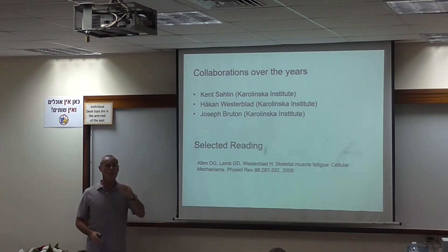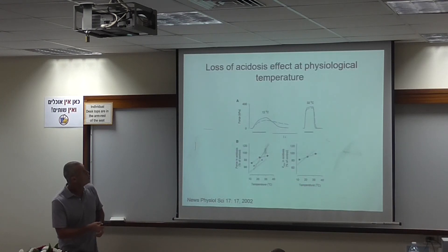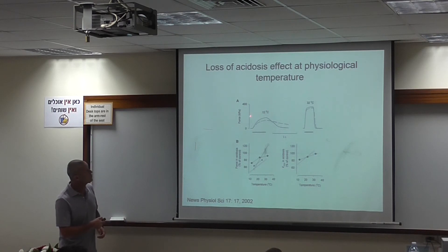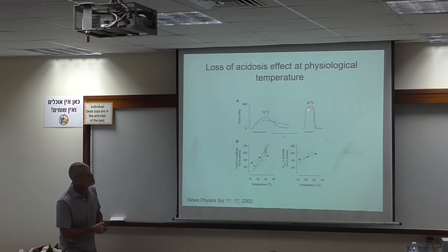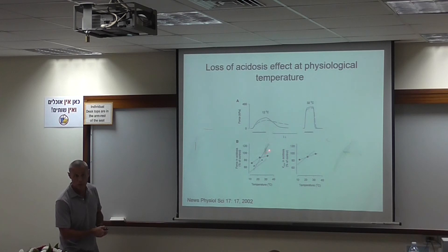There are other data showing that the effect of hydrogen ion is strongest at low temperature. When we go to more physiological temperature, the effect of pH on force is actually lost. For example, at 12 degrees in the control situation versus acidosis, the difference is large, but at 32 degrees the difference is much smaller. A plot of several studies shows force in acidosis as a percentage of control as a function of temperature: at low temperature, acidosis has a very marked effect, but as we increase towards physiological temperature, that effect is lost. Keep in mind this goes only up to 32 degrees, whereas muscle temperature is about 35 degrees.